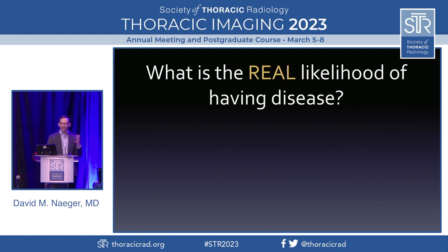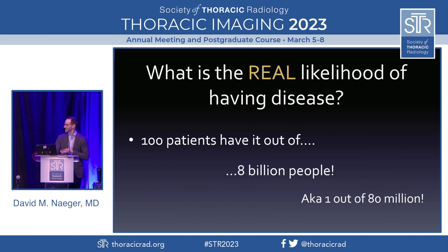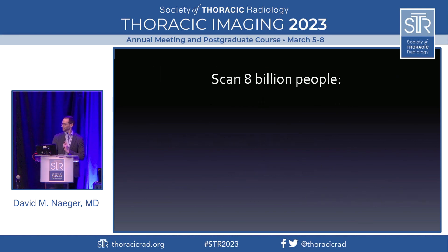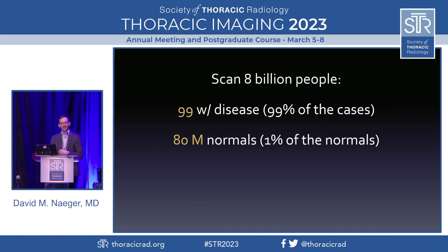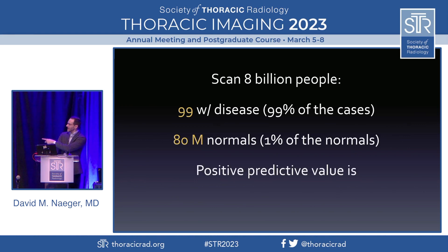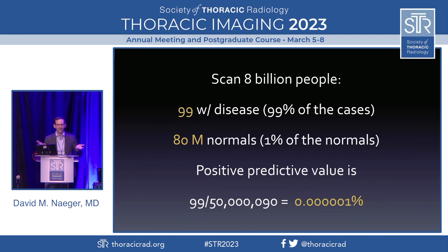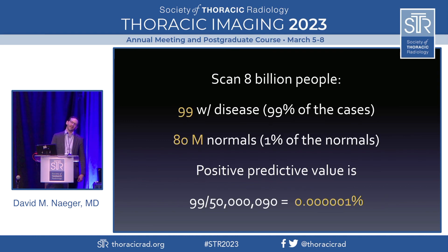We have 100 people with this disease out of 8 billion — so roughly one out of 80 million actually have it. If we did a head CT on the whole planet, we would catch almost everyone with the disease, but we would also get 80 million normal people who have an abnormal head CT. Because even a tiny false positive rate, applied to everyone, gives a massive number of false positives. If you have a positive test, the vast, vast chance is you're normal — or at least don't have this disease.